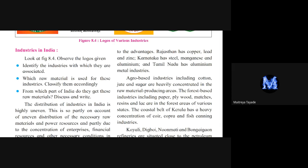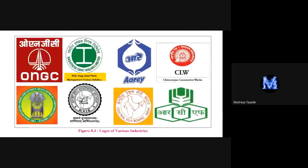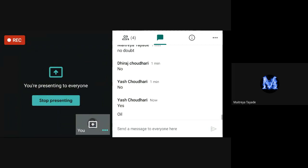Now I will show you some logos — ONGC, Rashtriya Ispat Nigam Limited, Chittaranjan Locomotive Works, MAIDC (Maharashtra Agro Industries Development Corporation Limited), Khadi Gramodyog Kendra, Resham Board, and RCF. Can you identify which sector these companies belong to? ONGC stands for Oil and Natural Gas Corporation — it is a government, that is public sector, company.